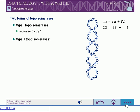Type 2 topoisomerases change linking numbers in steps of 2.